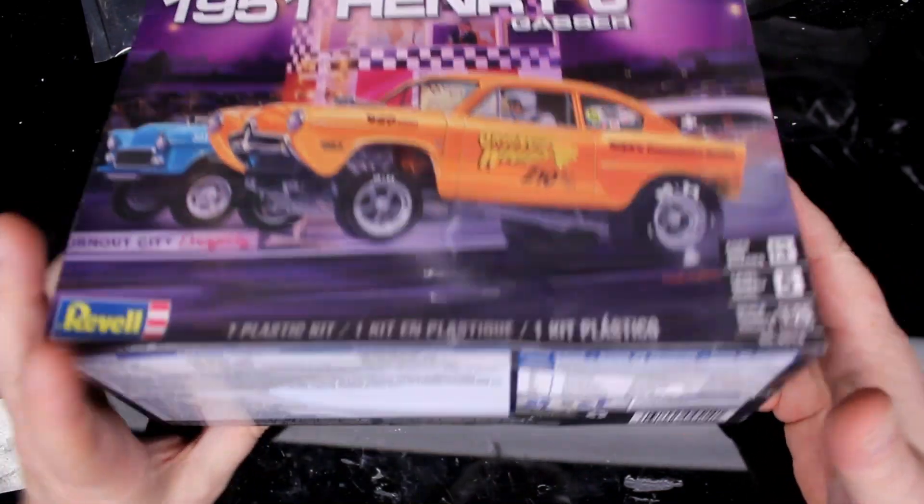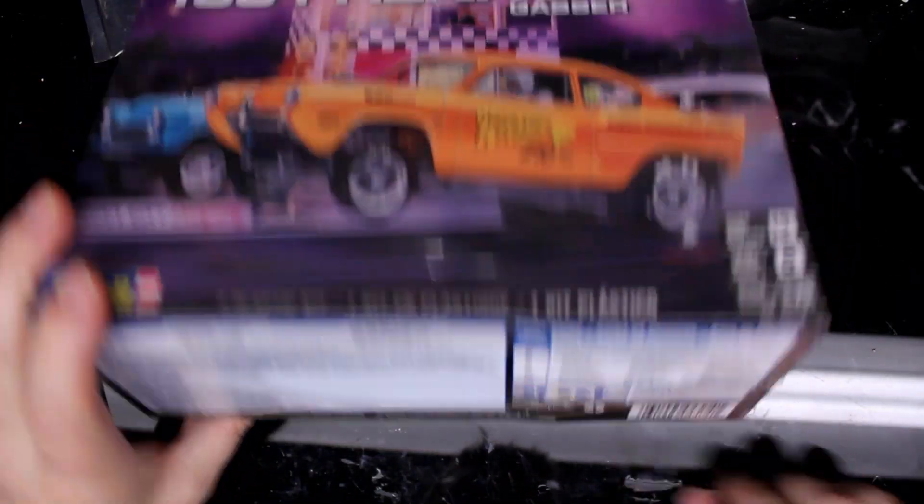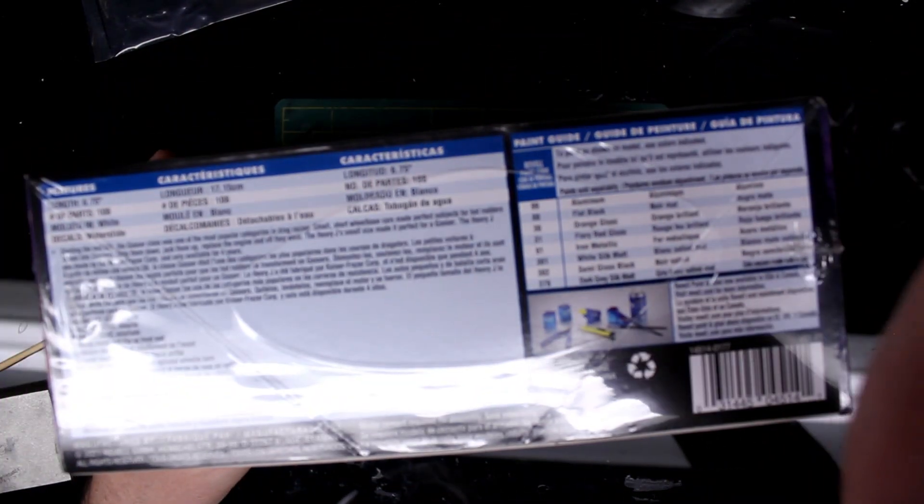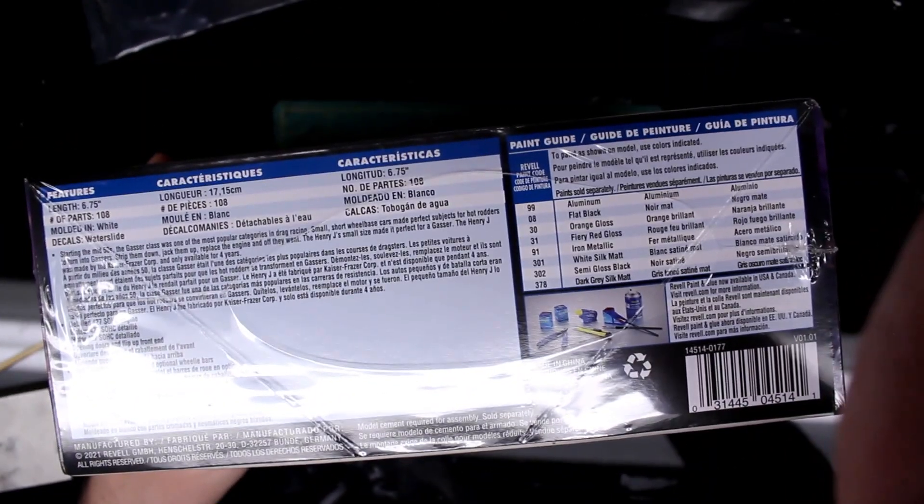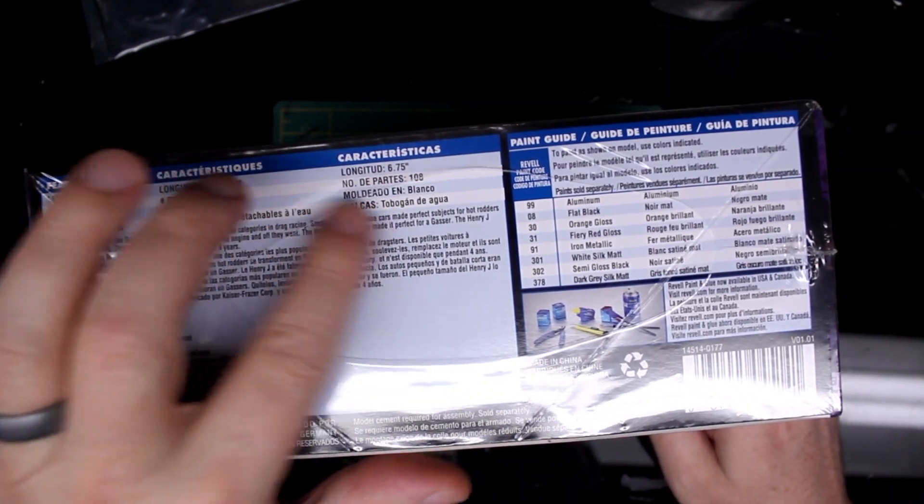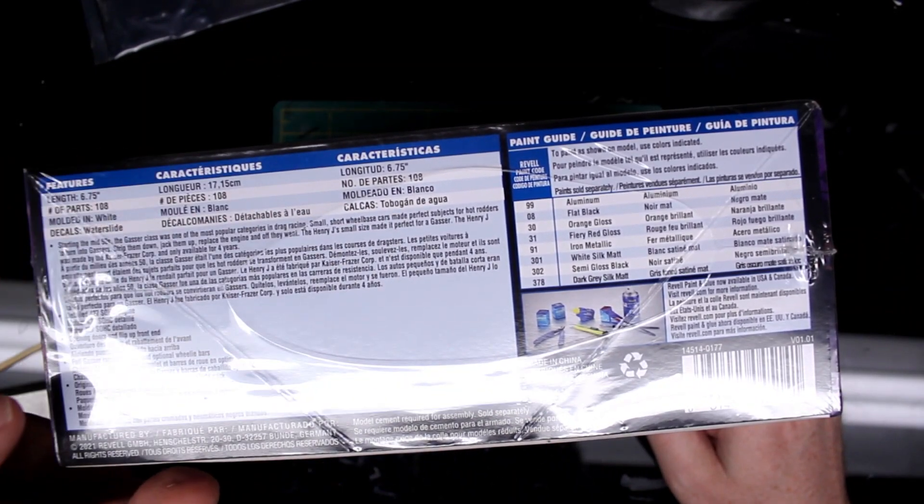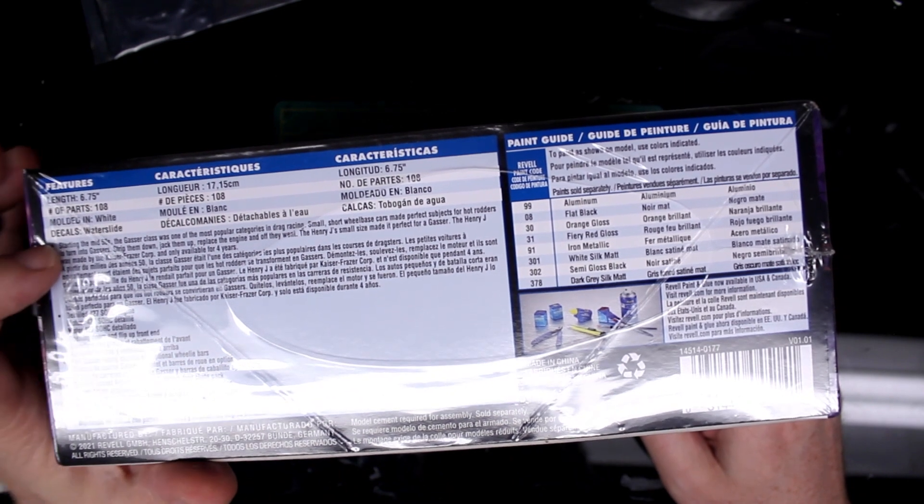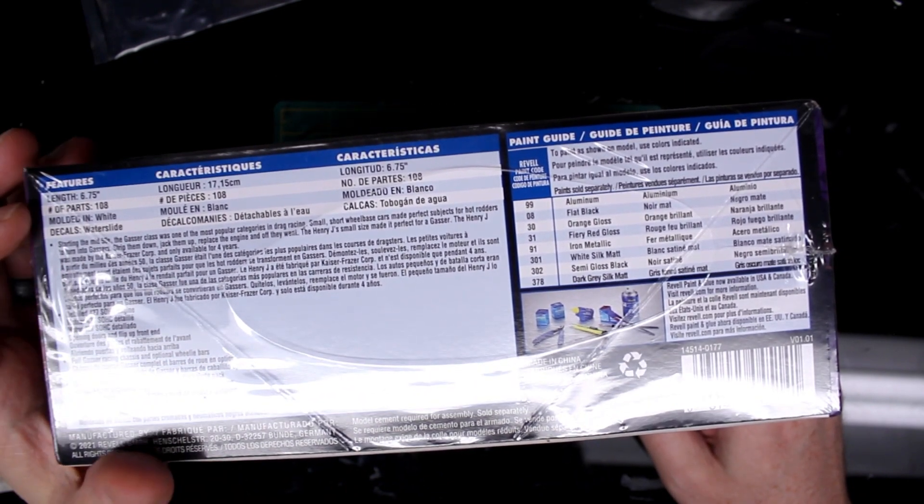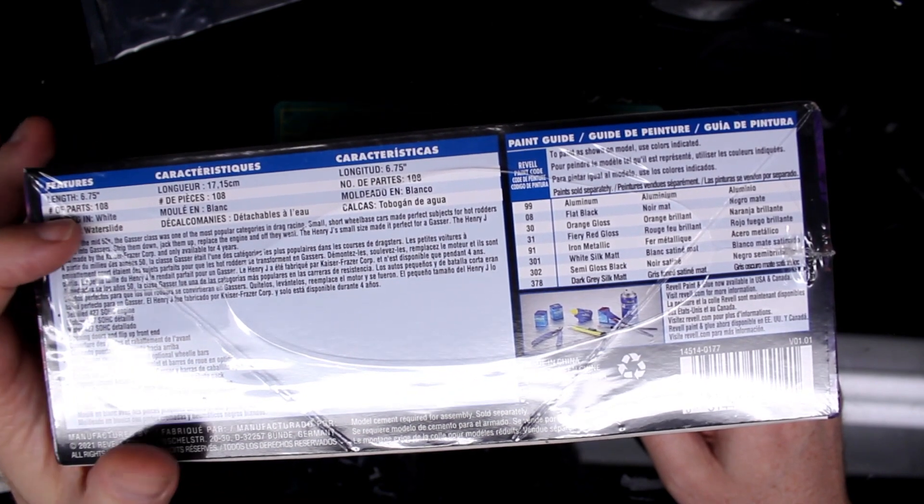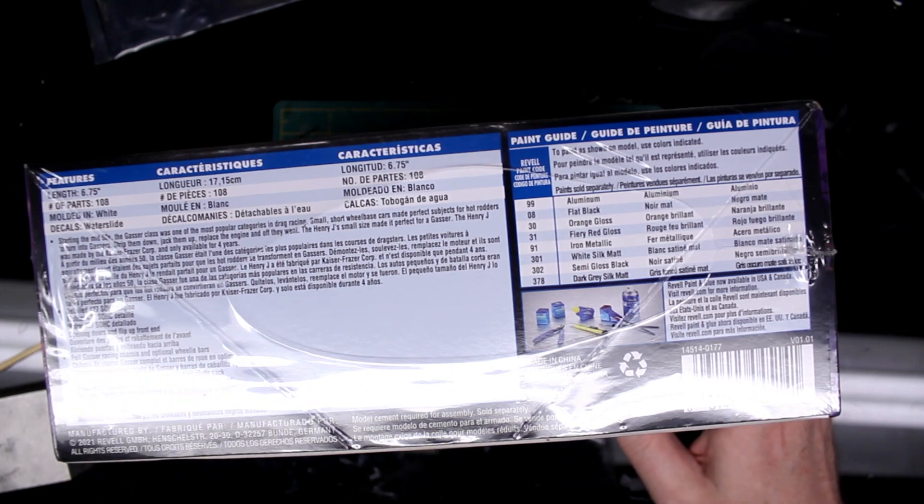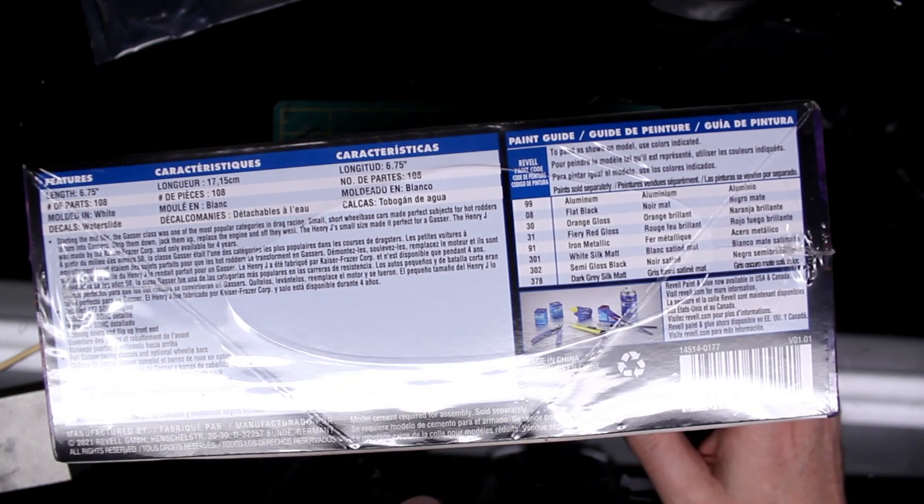So, I haven't opened this kit yet. We're going to do that together. Look at the sides. Revell likes to put some features of the kit on the side here, such as the length of it, the number of parts, what color it's molded in. And then over here, some of the paints that you're going to need.